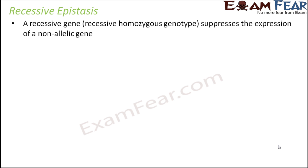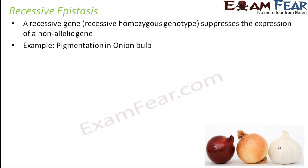In recessive epistasis, a recessive homozygous genotype suppresses the expression of a non-allelic gene. In the previous case of dominant epistasis, the white color showed its epistatic effect only when present in the dominant condition. But here we will look at an example — the pigmentation in onion bulb — where the epistatic effect is seen only when the gene is present in the homozygous recessive condition.